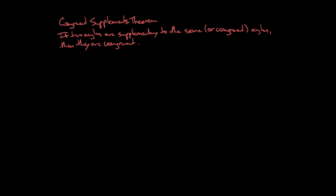We'll illustrate this with a diagram. If I have two angles that are supplementary to the same angle — so let's say I've got an angle here, we'll call this angle 1. And then I have another angle over here that's supplementary to it, we'll call this angle 2. And then I also have a third angle over here, angle 3, which is supplementary to angle 1 as well. So if I have two angles — angles 2 and 3 — that are supplementary to the same angle, angle 1, then they have to be congruent to each other.